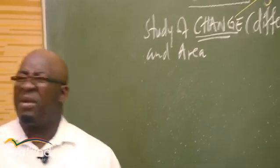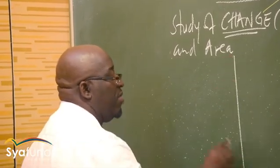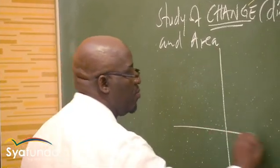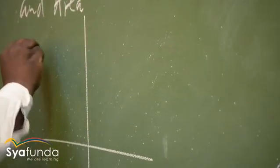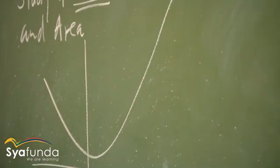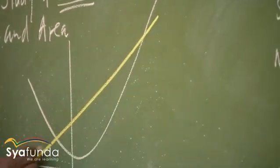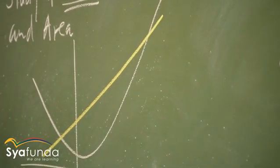We've been calculating gradients since grade eight and nine using straight line graphs — so why do we need calculus? Let's take a parabola as an example. If I have a curved graph like this parabola and I'm looking for the gradient, the situation becomes more complicated than with a straight line.